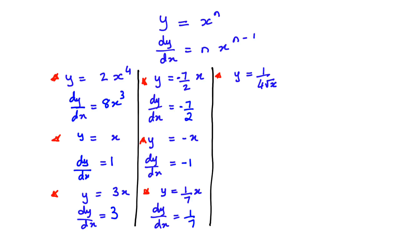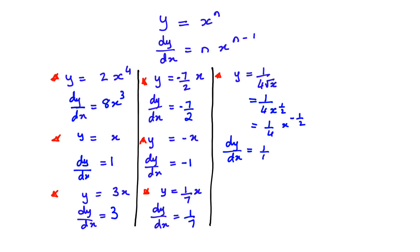For y = 1/(4√x), you cannot differentiate before simplifying. First change √x to x to the power of half, then bring it up so it becomes 1/4 · x to the power of negative 1/2. Now differentiate: dy/dx = 1/4 × (−1/2) = −1/8, and subtracting 1 from −1/2 gives x to the power of negative 3 over 2.